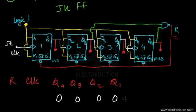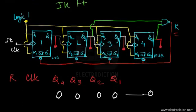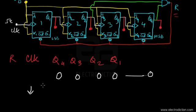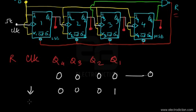The counter starts at state 0000, representing the zero state. Upon the arrival of the negative edge of the first clock pulse, the output of flip-flop 1 toggles to logic 1 from logic 0, while the outputs of flip-flops 2, 3, and 4 remain at logic 0, since they experience no negative edge at their clock inputs.